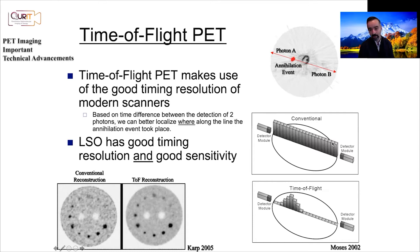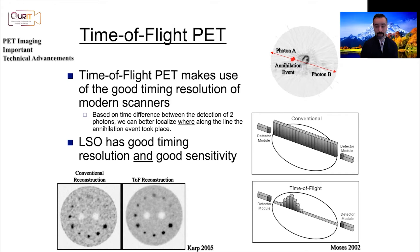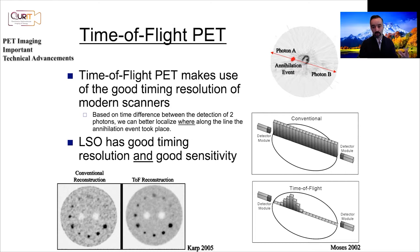Even without time-of-flight, when you surround the patient with detectors you can do tomographic image reconstruction and get good images. But when you do time-of-flight, your uncertainty along the line of response goes down, so instead of back-projecting along the entire line of response you back-project over a shorter region. This means you propagate noise less. LSO, for example, has been able to achieve this.